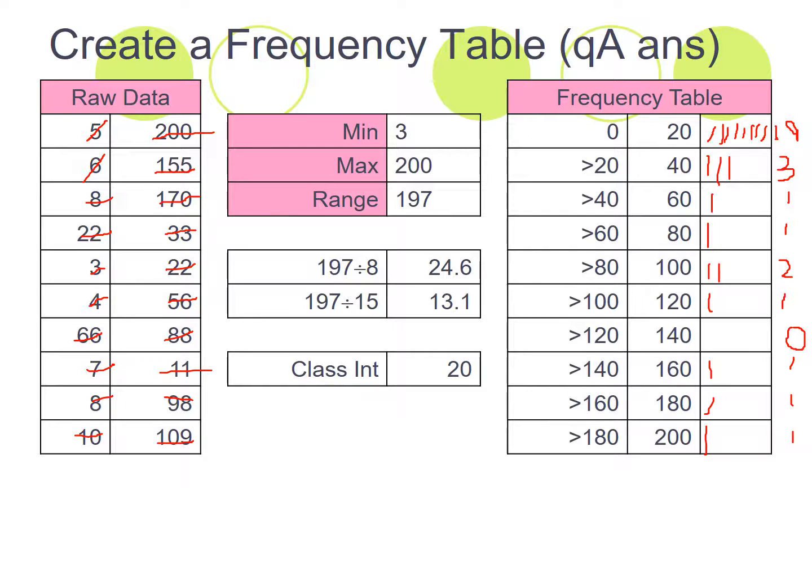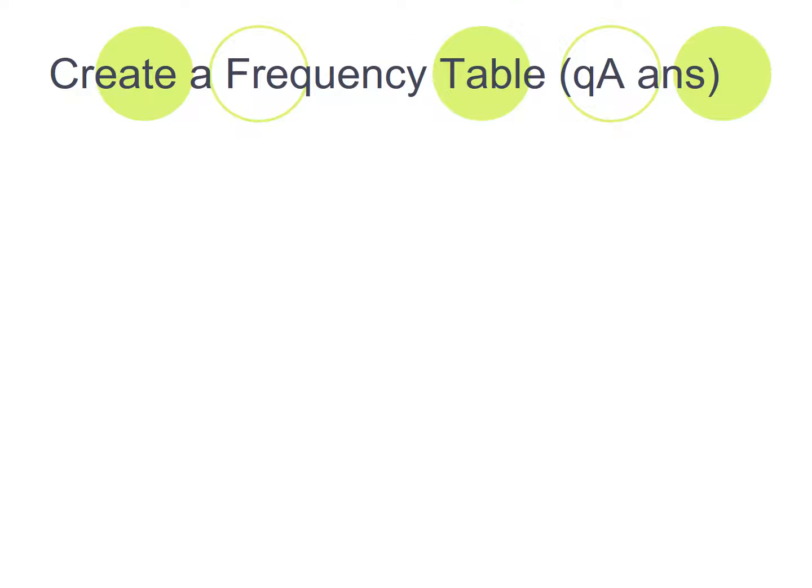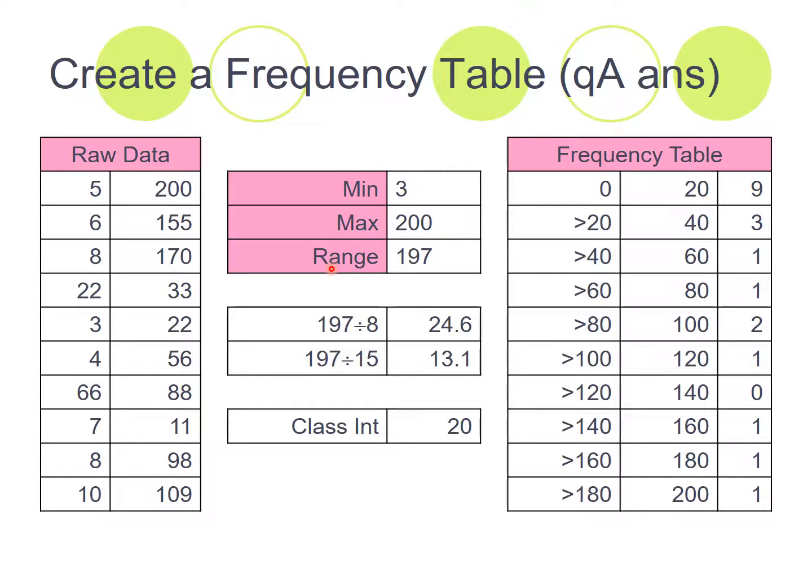So you just check your frequency table to make sure you haven't lost anything. And here is the answers done out nicely for you. And again, just typed out for you.